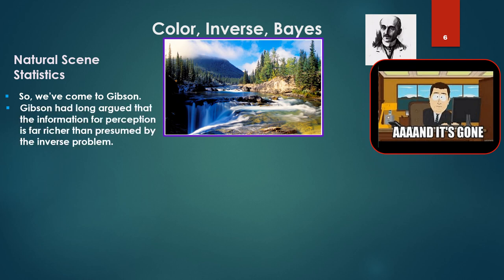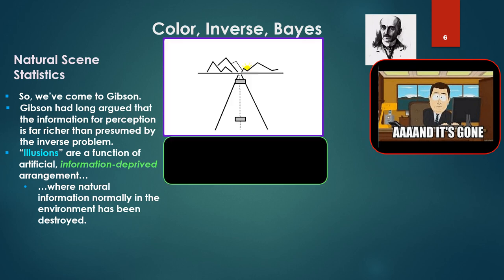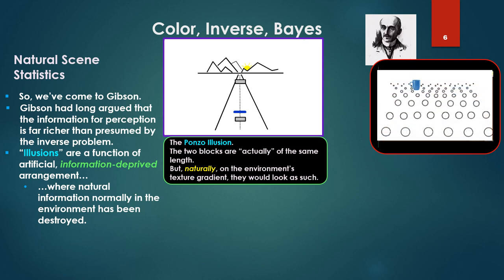Gibson had long argued that the information for perception is far richer than presumed by the inverse problem. Illusions, he argued, are a function of artificial information-deprived arrangements where natural information normally in the environment has been destroyed. For example the Ponzo illusion, the two blocks on the road there. Now the two blocks are actually the same length. That little blue line there is actually the same length. It never changes. So it kind of changes perceptually even as it moves.